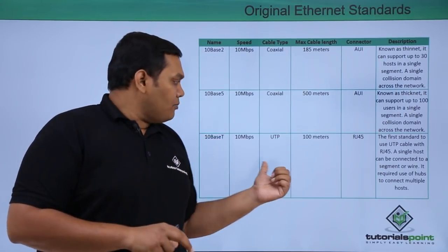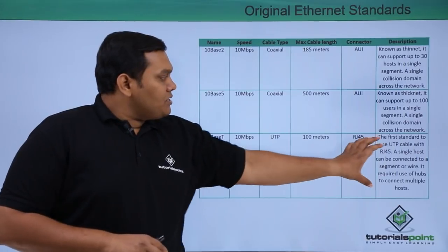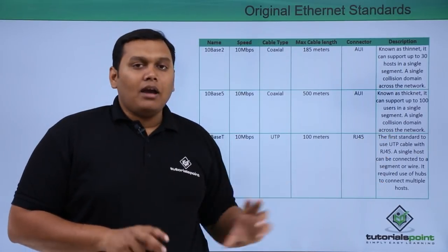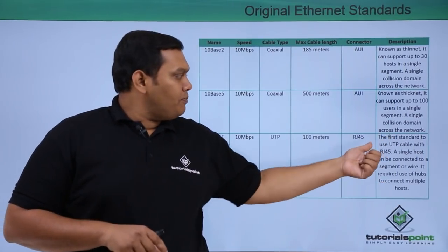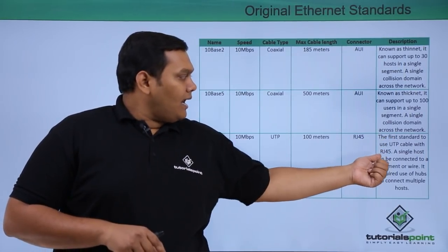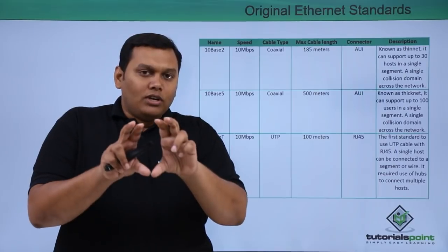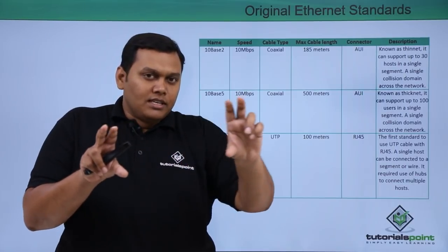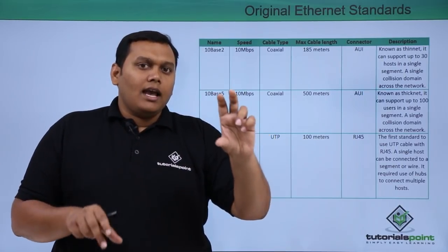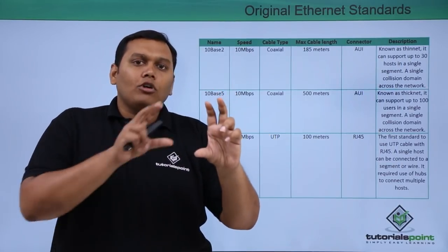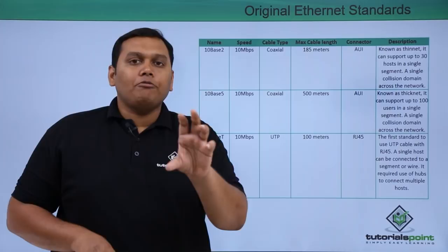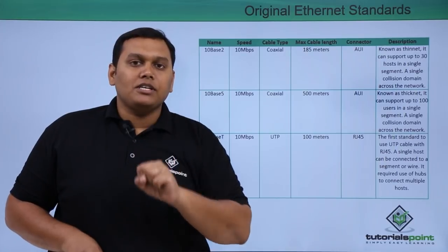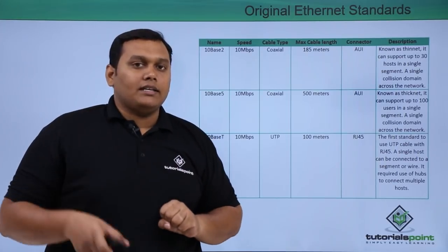With 10BaseT, it is the first time RJ45 uses UTP cable. It connects only a single host, and if more hosts need to be connected, a hub is required.